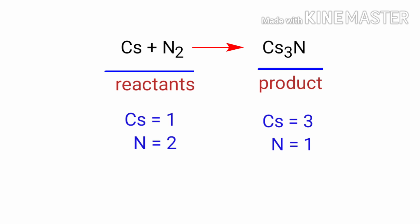In the reactants side, there are 1 caesium atom and 2 nitrogen atoms. And on the product side, there are 3 caesium atoms and 1 nitrogen atom. The number of atoms are not balanced on both sides.